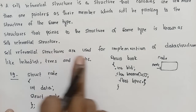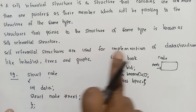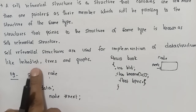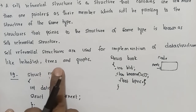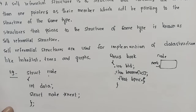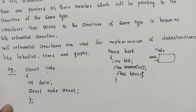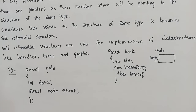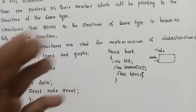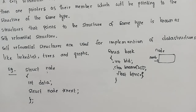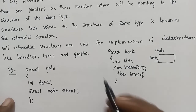Self-referential structures are used for the implementation of data structures like linked lists, trees, and graphs. These are dynamic data structures that rely on self-referential structures for their form and implementation.